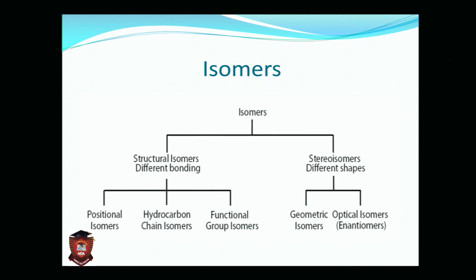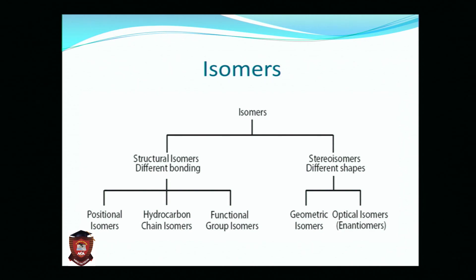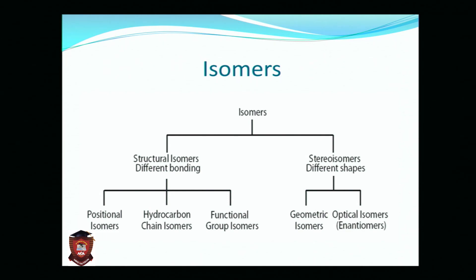There are six types of structural isomerism. Then we have just two types of stereo isomerism: geometric isomerism and optical isomerism. The structural types total six, and the stereo types remain two.